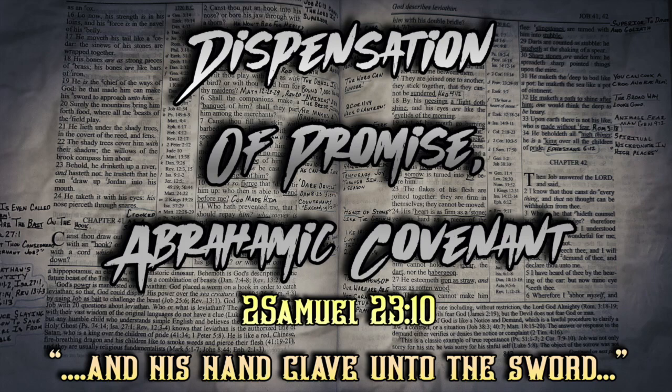Noah's descendants failed to spread out — they were supposed to overspread the whole earth, yet they all joined together to build the Tower of Babel. God came down, confounded their language, and scattered them. Eventually man got more wicked, and they gathered to build that tower — like a one-world government against God. Out of all that mess, God had a man he called out: a man named Abram. That brings us to this great scene in the Bible — the calling out of the nation of Israel. Abram will be the first Jew.